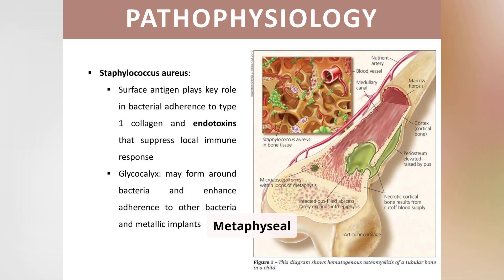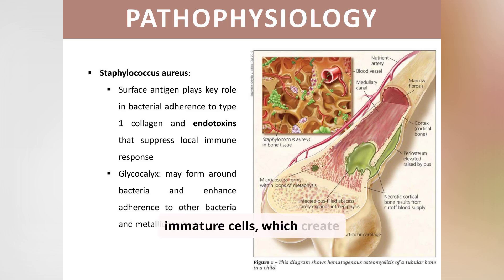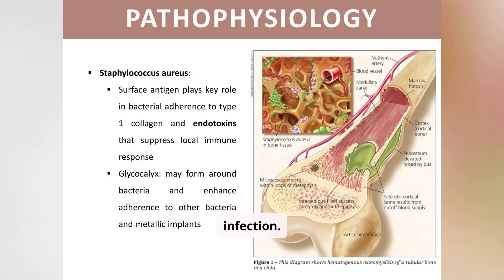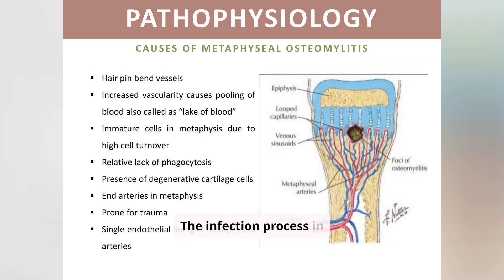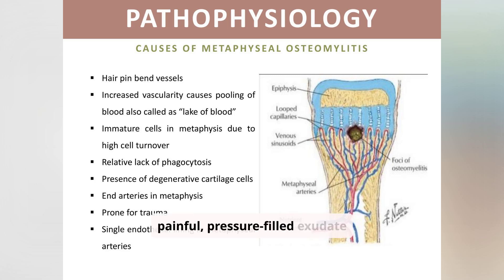Metaphysial osteomyelitis is facilitated by unique vascular structures and high turnover of immature cells, which create environments conducive to bacterial invasion. The infection process involves embolus entrapment in nutrient arteries, leading to bone necrosis and painful, pressure-filled exudate accumulation.